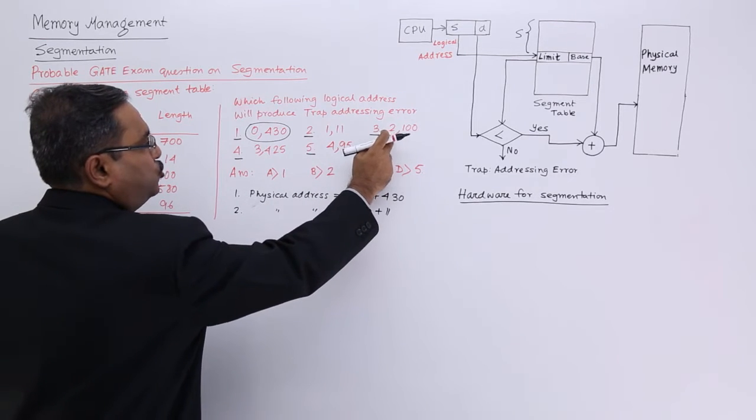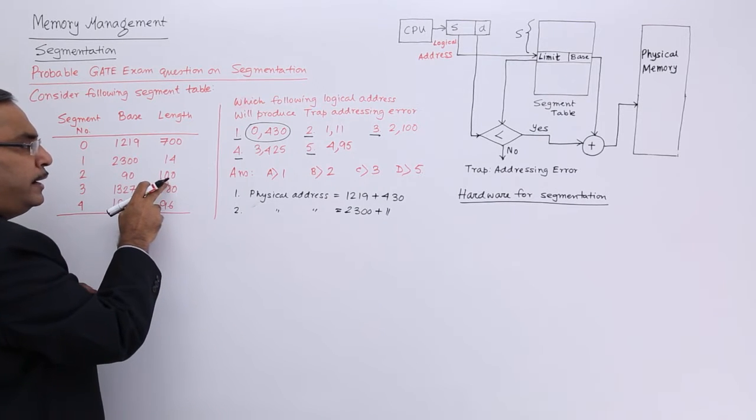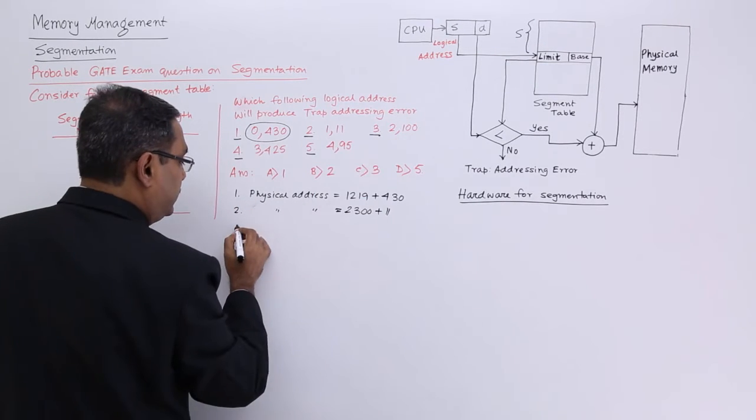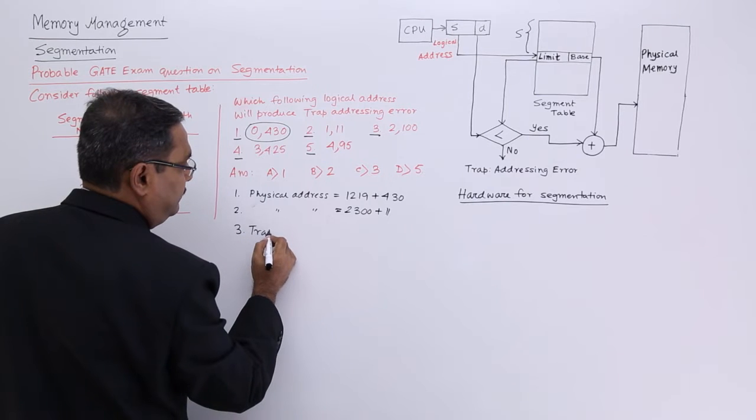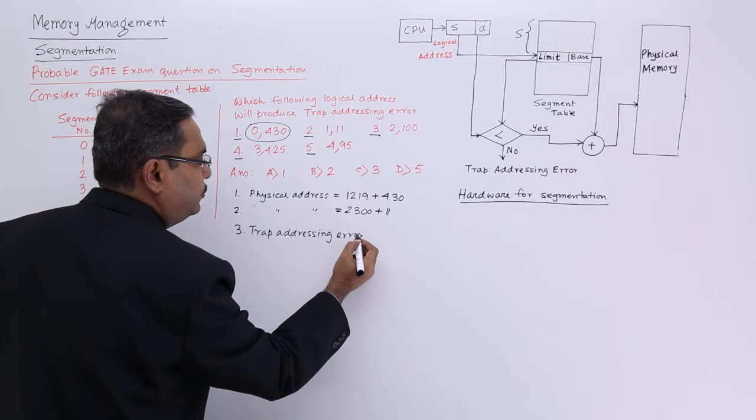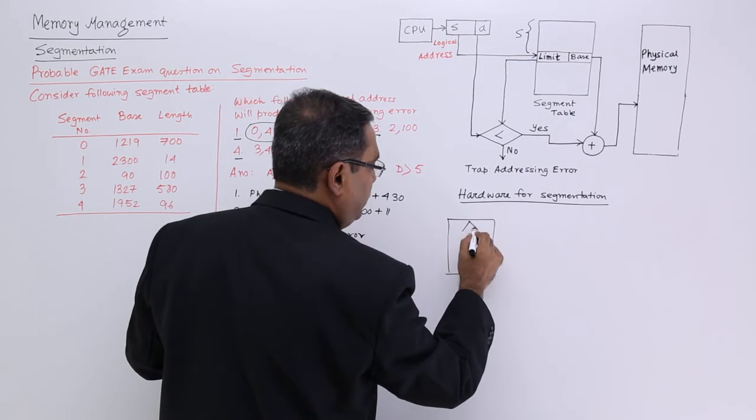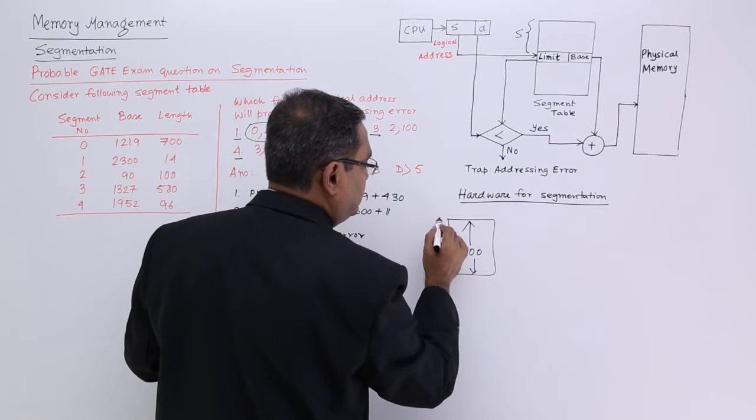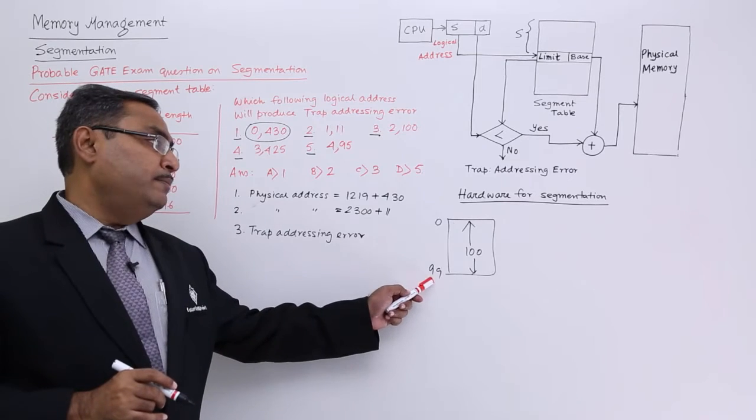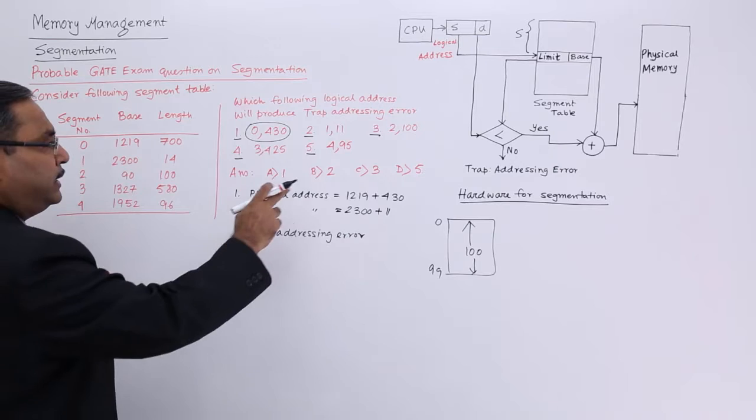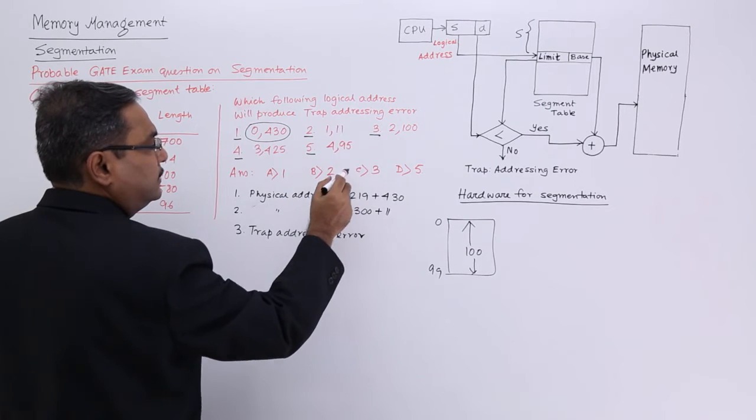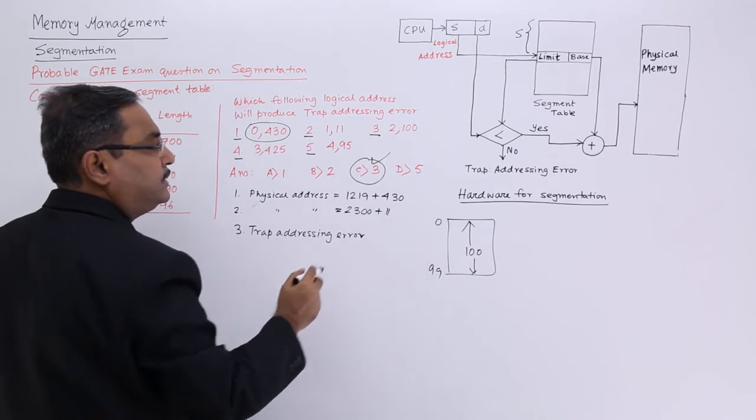Next one: 2,100. You see 100 is less than 100 is false. This will produce a logical error, so that is a trap addressing error. Because I told you earlier, a program may have 100 bytes, but its address will be ranging from 0 to 99. The offset address will be ranging from 0 to 99, so this 99 must be less than the size of the program, at least one less than. So as they are equal, it will produce a trap addressing error. Physical address cannot be calculated, so 3 is the answer.